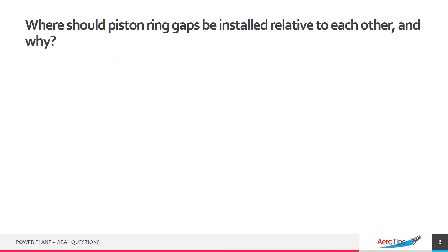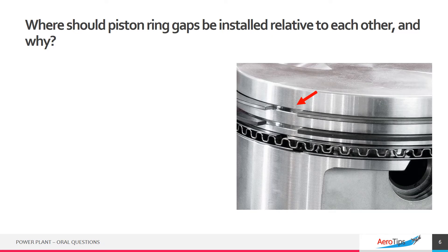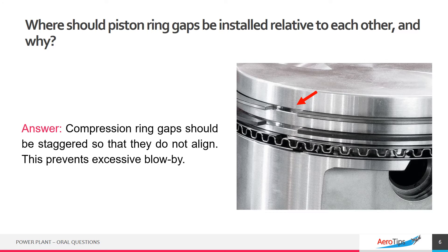Where should piston ring gaps be installed relative to each other, and why? Compression ring gaps should be staggered so that they do not align. This prevents excessive blow-by.